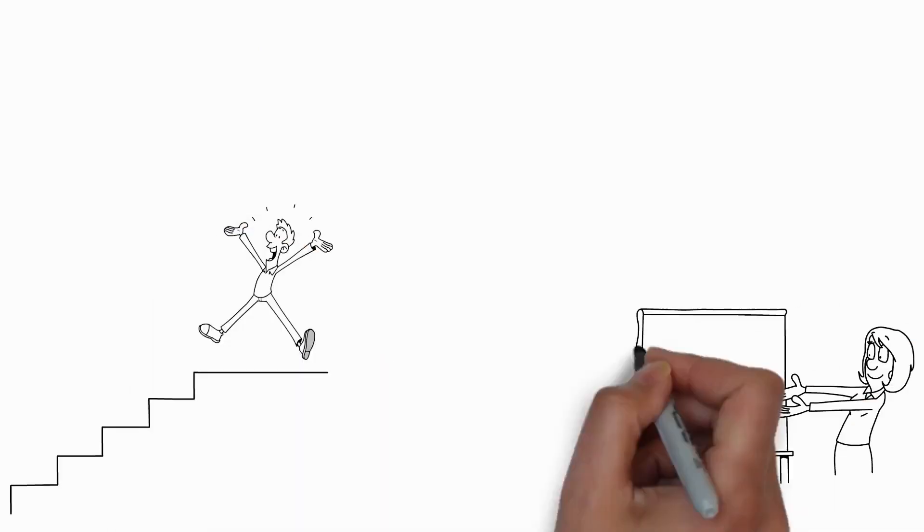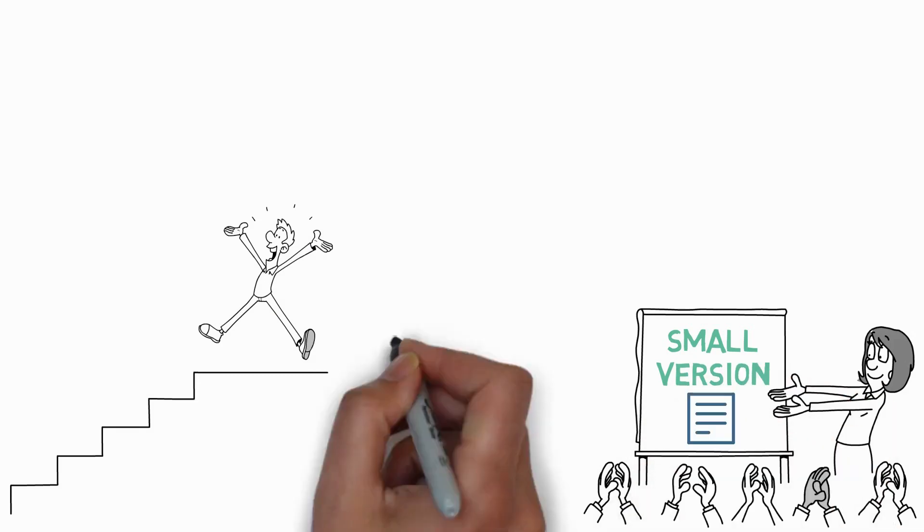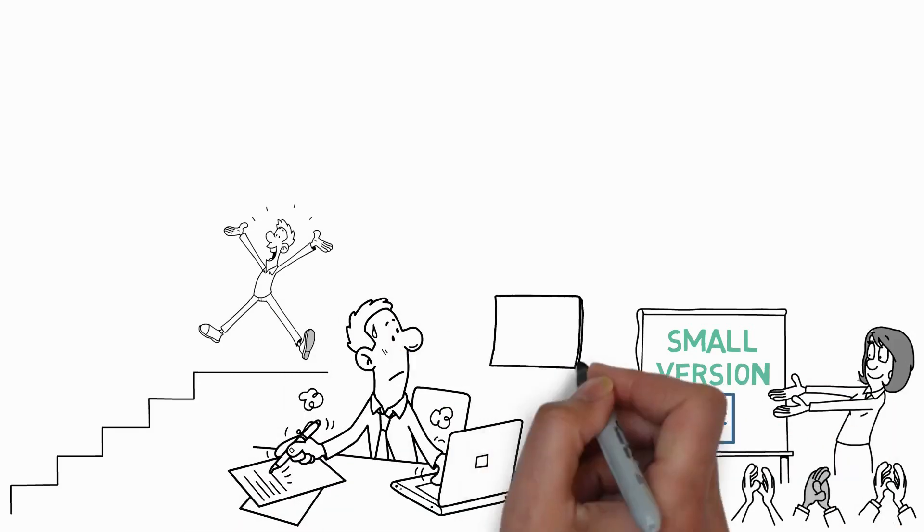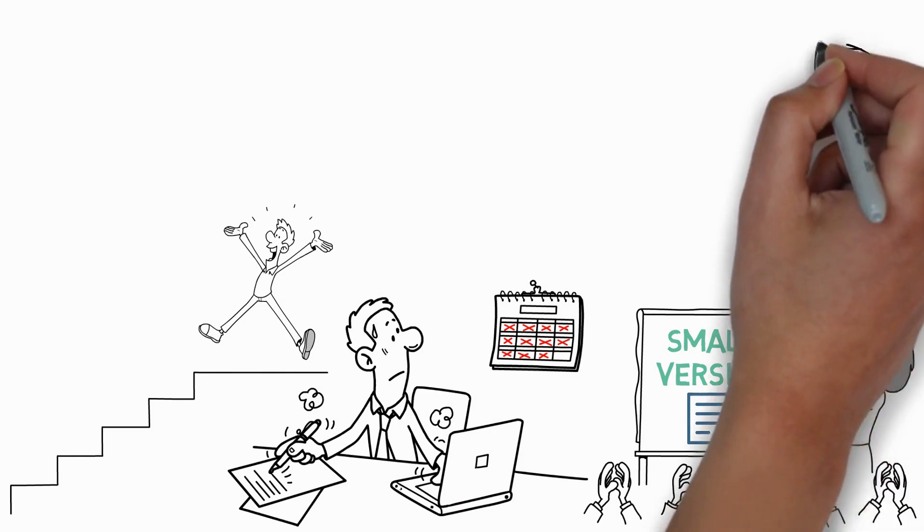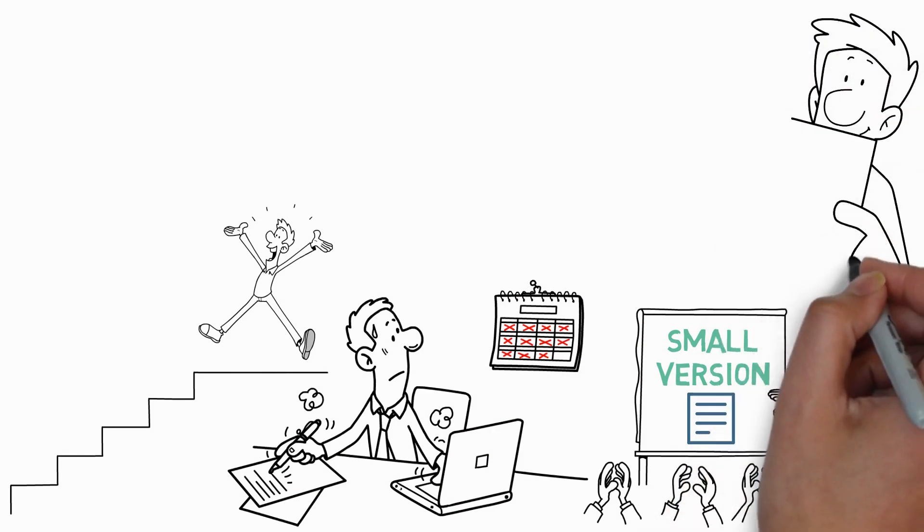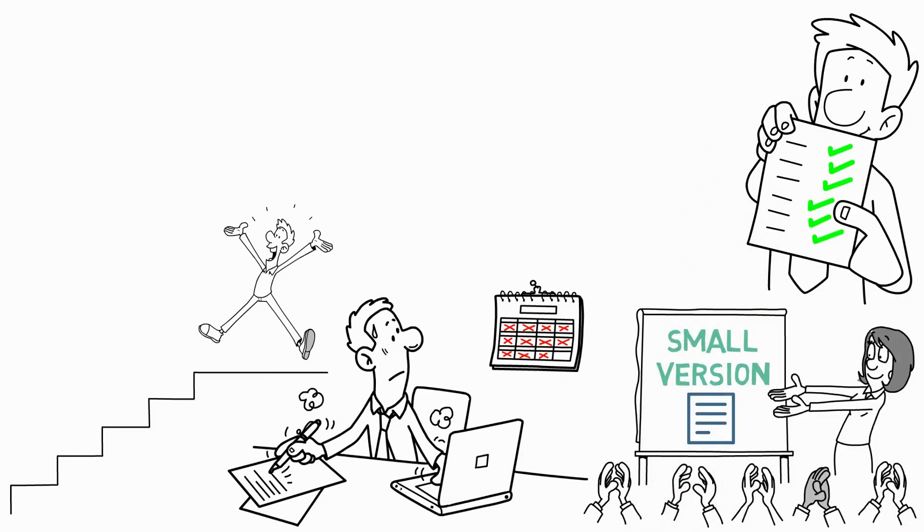That is why mini habits are so effective. You perform the small version if you don't feel like practicing the habit that day or if you're short on time. This way, you still get stuff done while avoiding guilt. However, the mini version frequently evolves into a longer form.